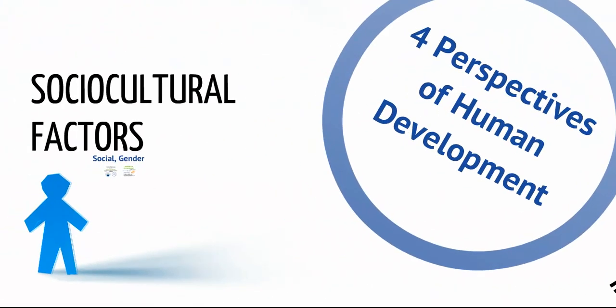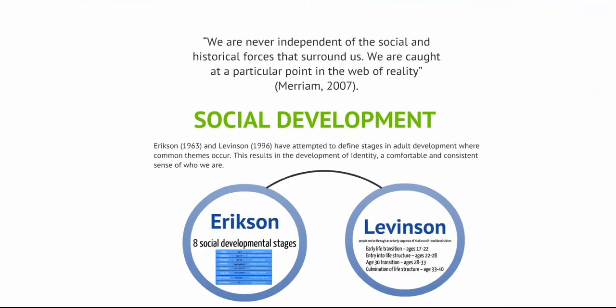The third major perspective is sociocultural, which involves both social and gender ideas. Thinking of adult development from this perspective, we need to consider how factors such as gender, age, race, socioeconomic status, sexual orientation, and ethnicity affect our learning and development. This approach acknowledges how the social world influences our development. Think to yourself how your own life might be different if you had been born a different gender or race. These notions are socially constructed, so what you learn about yourself cannot be removed from the social roles you take on. The life transitions and positions we find ourselves in affect how society defines us — for example, the timing of your identity changes when you get married or have children. Learning experiences that connect to where you are as an adult learner in your own life experience are important to make learning meaningful and authentic. We are never independent of the social and historical forces that surround us; we are caught at a particular point in the web of reality.